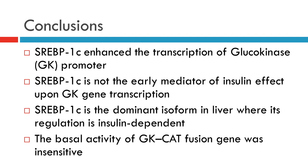Therefore, SREBP could play a critical role in sustaining long-term GK gene transcription in the presence of insulin. Finally, SREBP1 knockdown using the RNA interference technique severely reduced the effects of insulin and 25 millimolar glucose on FAS gene expression, but not on GK and LPK gene expression. These results correlated with the observed response of glucokinase to carbohydrate refeeding in SREBP1C knockout mice. Considered altogether, these data definitively establish that SREBP1C is not the early mediator of insulin effect upon GK gene transcription.